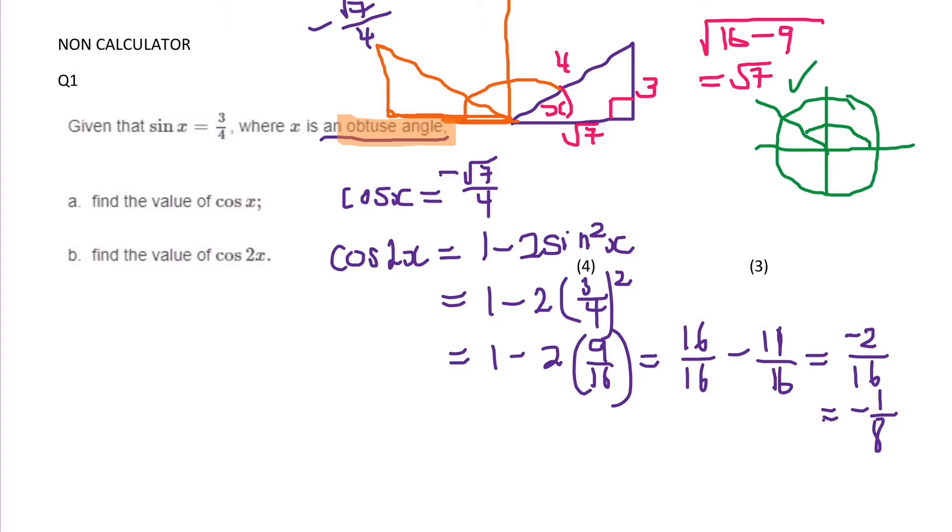So that gets you 4 marks. And for the second part for 3 marks, I used the formula, the double angle rule: 1 minus 2 sine squared x is equal to cos 2x. And then I just used the number that was already given to me. The reason why I chose that one is because here it's given to me, so I know it's right 100%. Whereas I could have got the answer in A wrong.